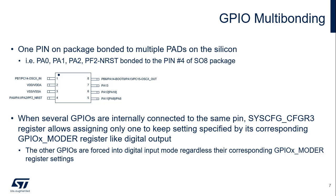One pin on the package can be bonded to multiple pads on the silicon — for instance PA0, PA1, PA2, PF2N, and RST bonded to pin 4 of the SO8 package. When several GPIOs are internally connected to the same pin, the SysCFG_CFGR3 register allows assigning the one to keep settings specified by its corresponding GPIOx_MODER register. The other GPIOs are forced into digital input mode, regardless of their corresponding GPIOx_MODER register settings.